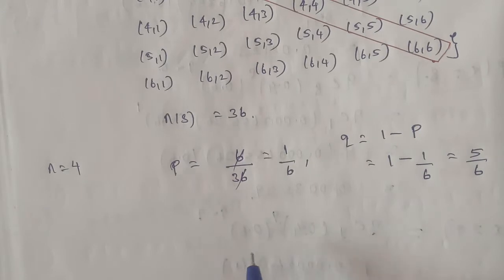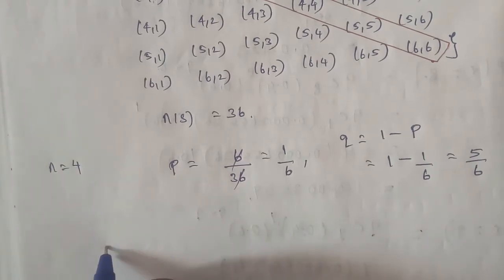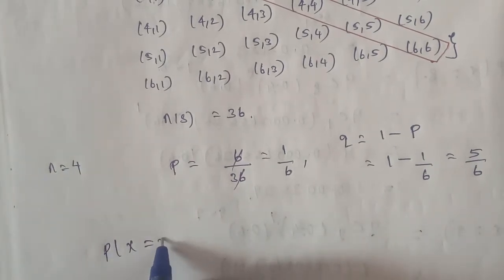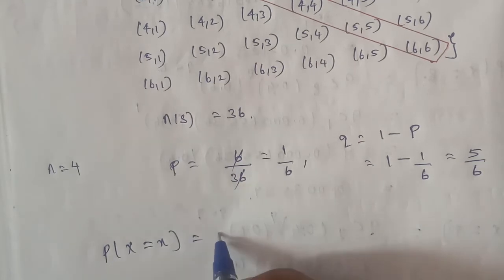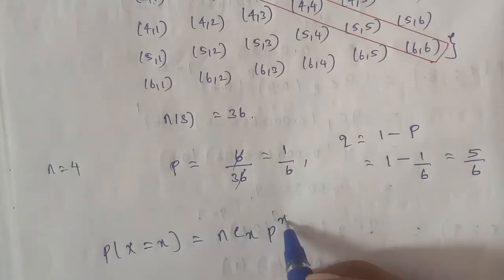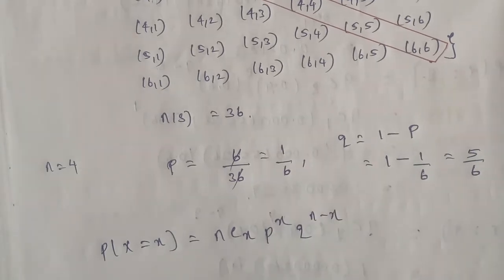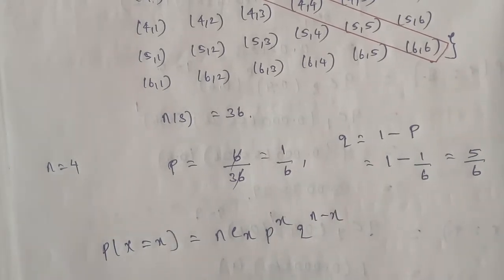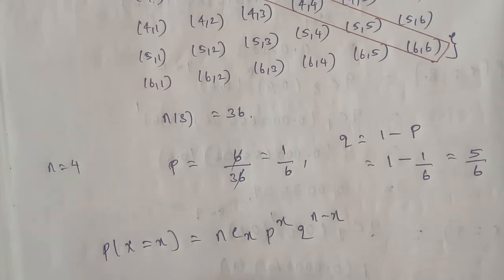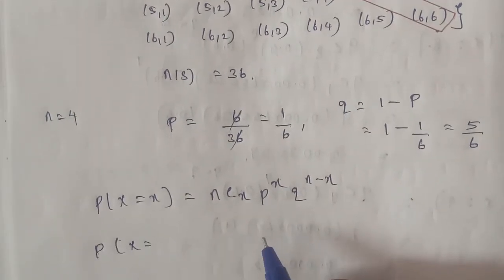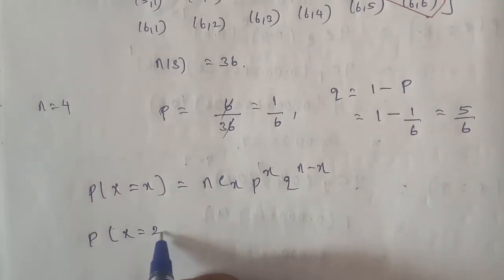We know the binomial distribution formula: P of capital X is equal to x, the formula is nCx times P power of x times Q power of n minus x. Given in the question, two successes, capital X is equal to, P of capital X equals x with value of 2. Substitute the value of 2.